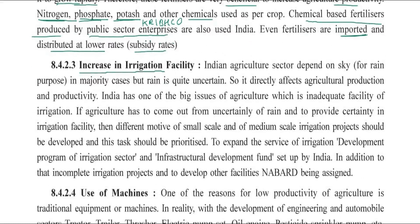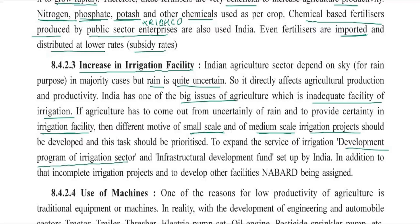Irrigation facilities are the next technological measure. Rainfall is uncertain, so if farmers depend on rainfall alone, crop production will be inconsistent — sometimes more, sometimes less, and crops may come late or early. Inadequate irrigation facilities are a main problem and a big issue for agriculture. We need to develop irrigation facilities by launching small-scale and medium-scale irrigation projects, large dams, and small check dams. India set up an irrigation sector development program and an Infrastructure Development Fund. NABARD also provides financing for such projects.